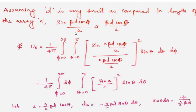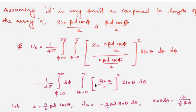Substituting this approximation, U_naught = (1/4π) × integral over φ from 0 to 2π, integral over θ from 0 to π, of [sin(nβd cos θ / 2) / (nβd cos θ / 2)]² sin θ dθ dφ. Integrating over dφ gives 2π. Then we let z = (n/2)βd cos θ, so the integrand takes the form sin(z)/z.